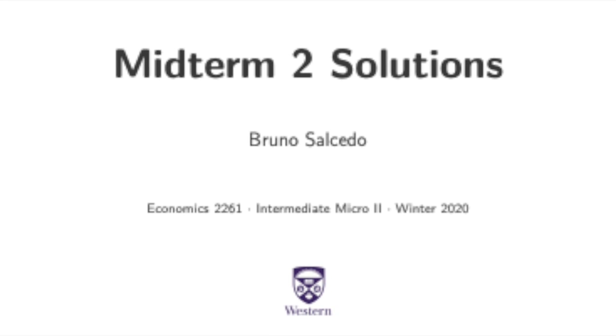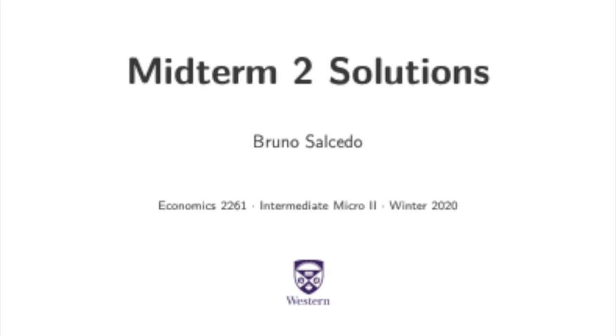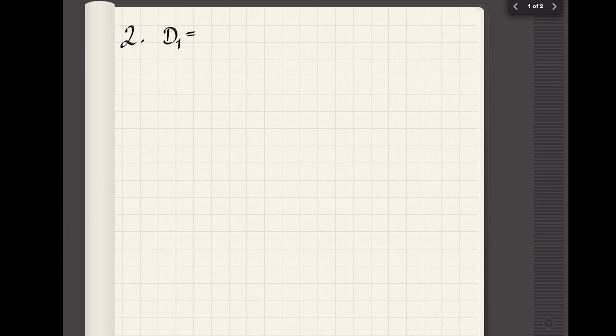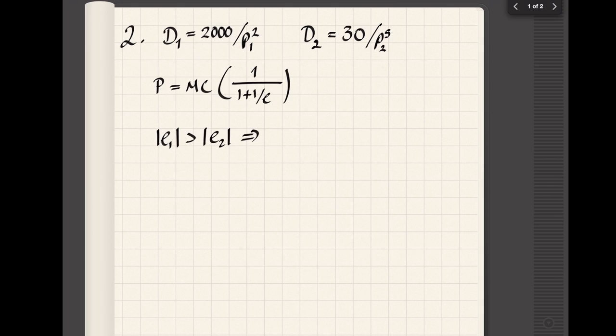All right, let's talk about the solutions to the second midterm for the afternoon class. The second problem was about market segmentation and in particular about the markup pricing formula. If you remember this equation that we talked about before the break, it tells us that the elasticity is everything you need to know to determine which market gets a higher price.